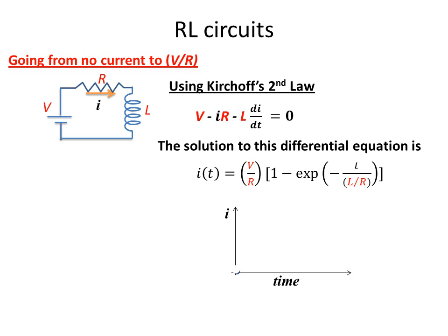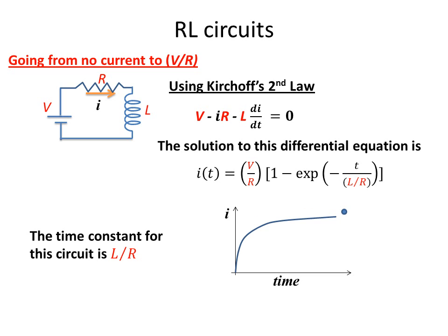If we look at this on a graph, we start at zero for the current, then it goes up to some constant value of V over R. The time constant for the circuit is given by L divided by R, and L divided by R is in seconds. So the characteristic time for this rise is the inductance divided by the resistance of this circuit.